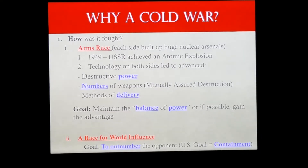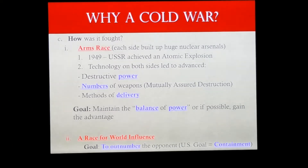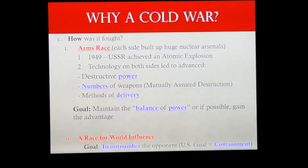All of this arms race circles into mutually assured destruction — the MAD theory. With the nuclear power we now have, even just 10 nuclear weapons could destroy the entire world — block out the sun, everything dies. Because everyone knows that, and everyone knows who has nukes, if a nuclear war starts it's all over. That shared understanding may actually prevent another world war. The second method was a race for world influence: having more allied countries than the other side, which ties into the goal of containment.